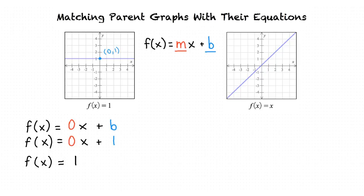The key things to look for when identifying f(x) = 1 are a horizontal line — that is, a line with a slope of 0 — and a y-intercept at the point (0, 1).